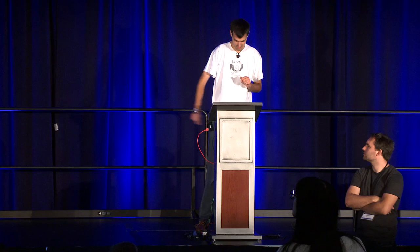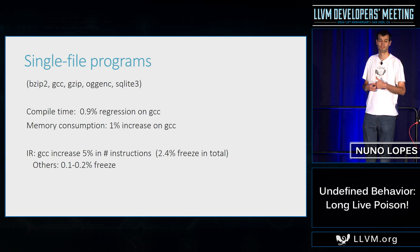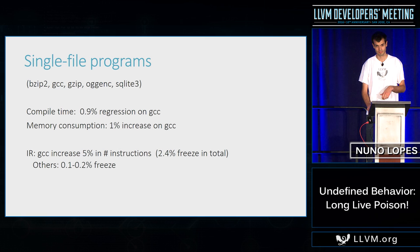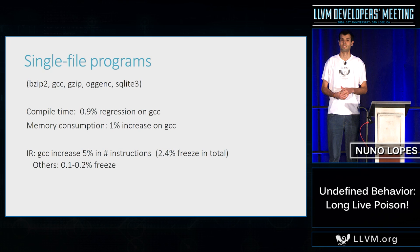Another question: given benchmarks show typically 0.1% of instructions are freeze — with GCC the worst case at 2.5% — how do you deal with freeze acting as an optimization barrier? 95% of LLVM optimizations don't care about poison or undef, and freeze just sits there as an optimization barrier. The speaker acknowledged this: you need to teach optimizations what freeze is, though freeze won't be very common. Loop unrolling currently doesn't kick in because it doesn't know what freeze is, so they need to fix that. The benchmarks show performance doesn't get super horrible.